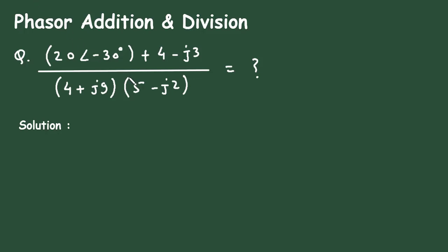In this video we will see an example on phasor addition and division. Here we can see this is given in polar form and this is given in rectangular form.